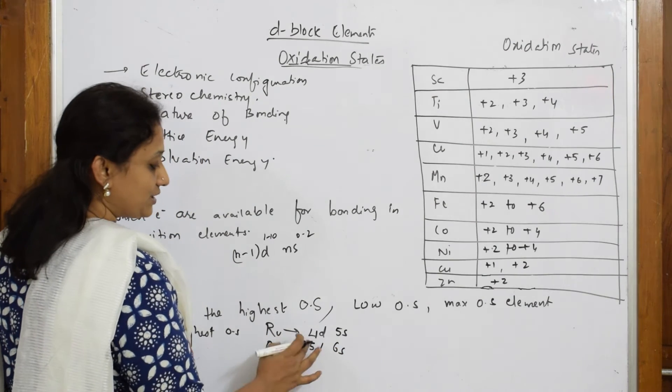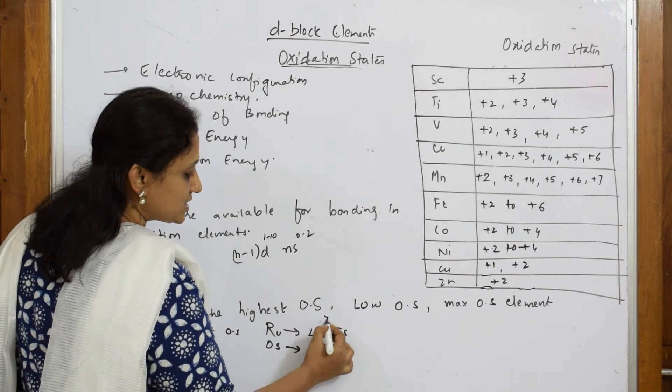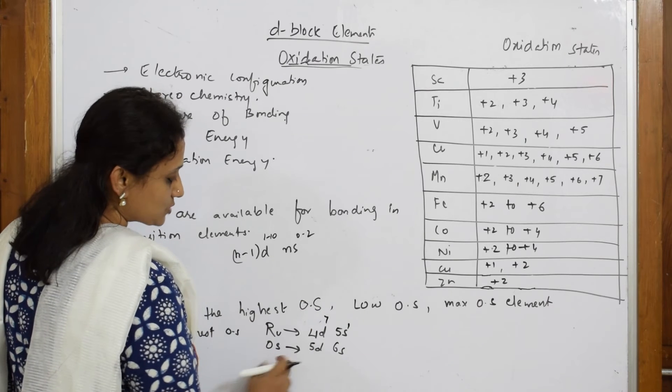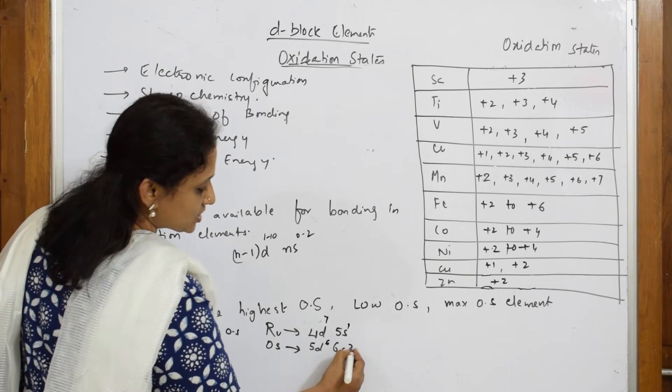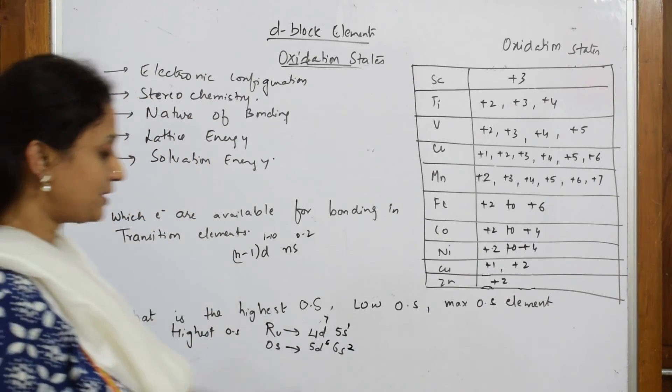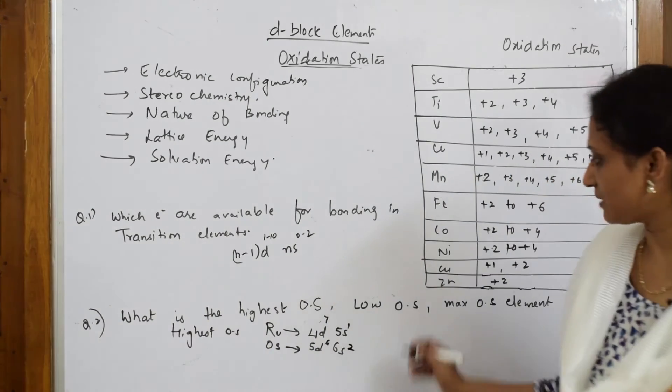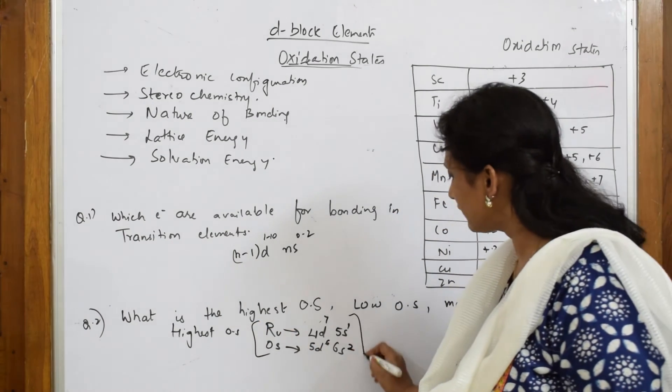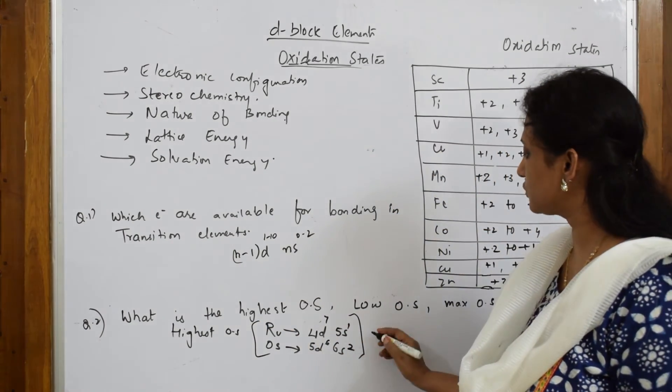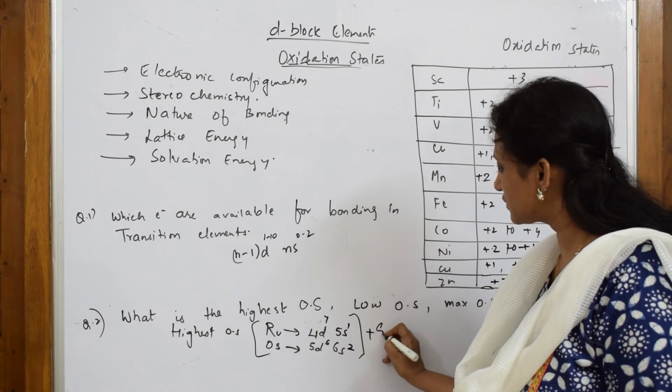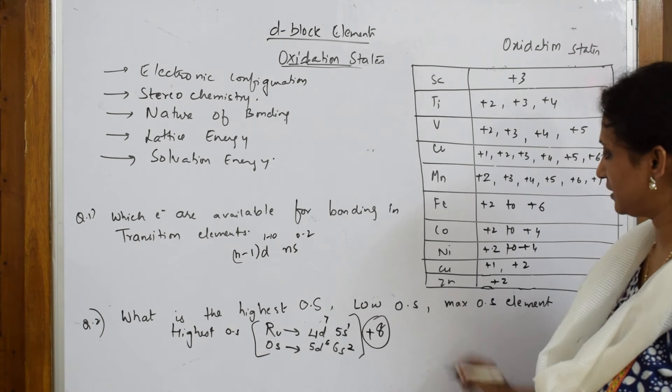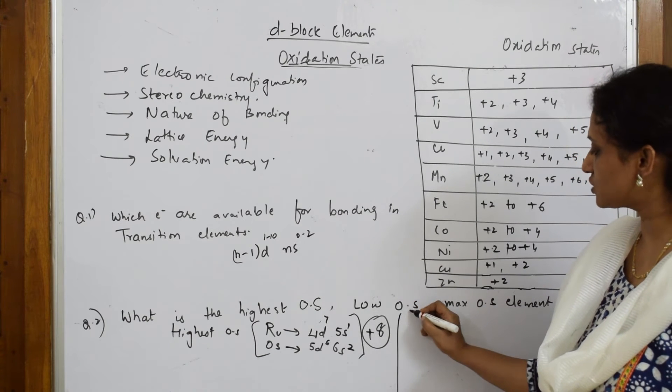When I fill the electrons, ruthenium is 4d7 5s1, so 7 plus 1 equals 8. Osmium is 5d6 6s2, so 6 plus 2 equals 8. The maximum oxidation state of plus 8 is shown by ruthenium and osmium.